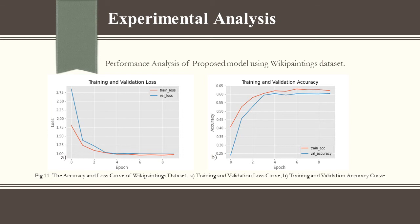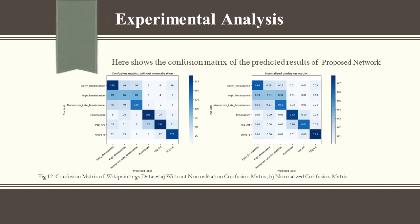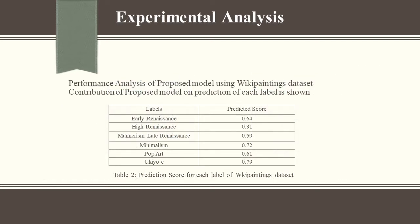Figure 11 shows the training and validation loss curve of the WikiPaintings dataset, as well as the training and validation accuracy curve. Figure 12 shows the without-normalization confusion matrix and the normalized confusion matrix of the predicted results of the proposed network. Table 2 shows the prediction score for each class of the WikiPaintings dataset for the proposed model.